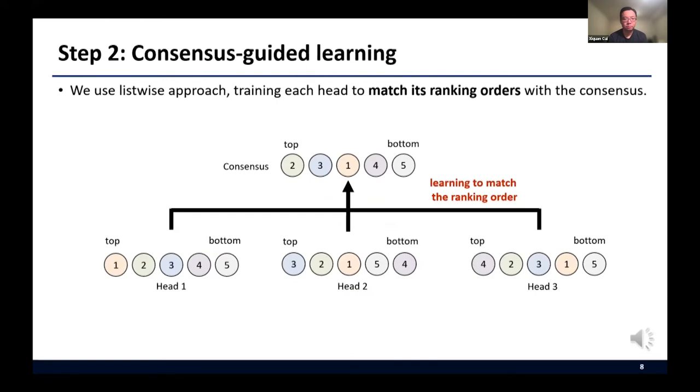Now, we enhance the performance of each head using the generated consensus. Here, we use list-wise learning-to-rank approach, training each head to match its ranking orders with the consensus. Note that the consensus collaboratively evolves with the heads during the training. So the improved heads generate more accurate consensus again, interactively boosting the recommendation quality throughout the training process.